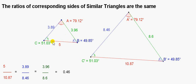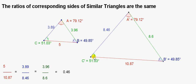Now, this red side of the small triangle is opposite angle A. The red side of the large triangle is opposite angle A prime. We say that this side, which is length 5, corresponds to this side here, which is length 10.87. We could look at the ratio of the two red sides — so 5 divided by 10.87. So here we have a ratio of corresponding sides.